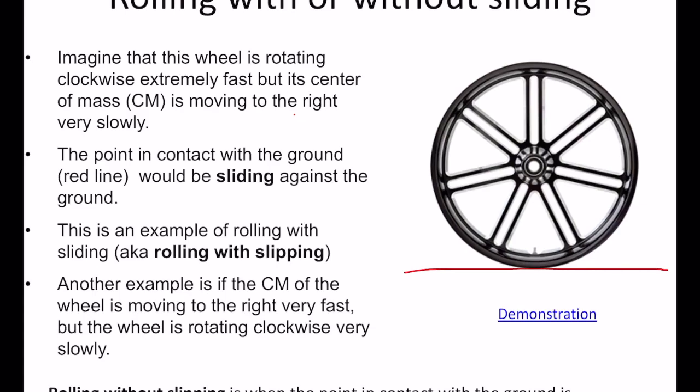Rolling without slipping is what happens when you put a stick through the middle of the wheel as an axle and move it horizontally, letting the wheel roll naturally without any restriction. In that case there is no slippage or sliding between the wheel and the ground. The point of the wheel instantaneously in touch with the ground is momentarily at rest. That is what we call rolling without slipping.